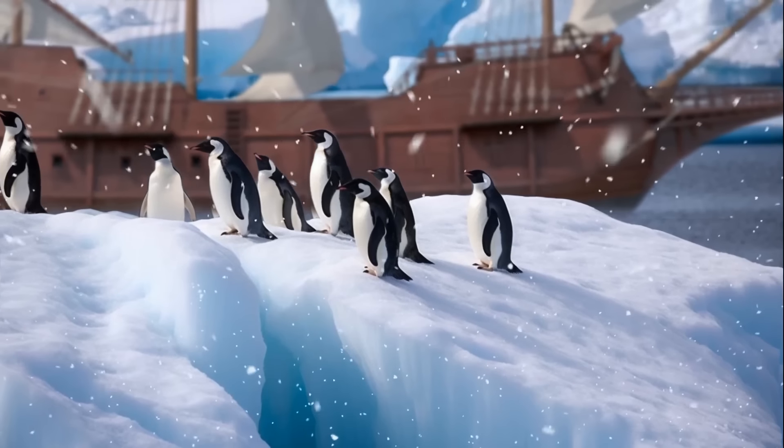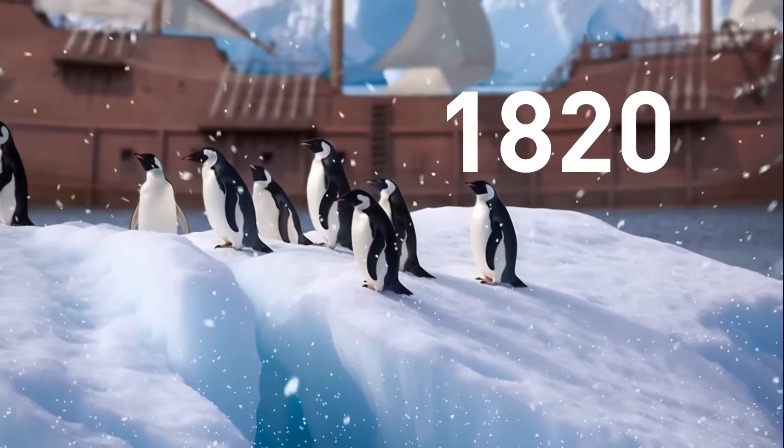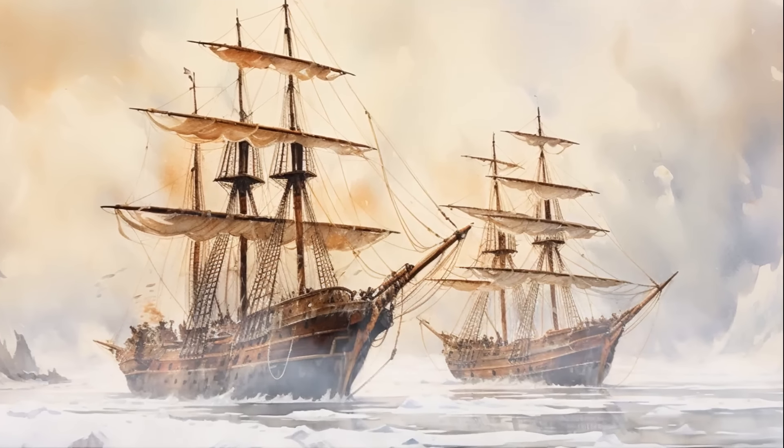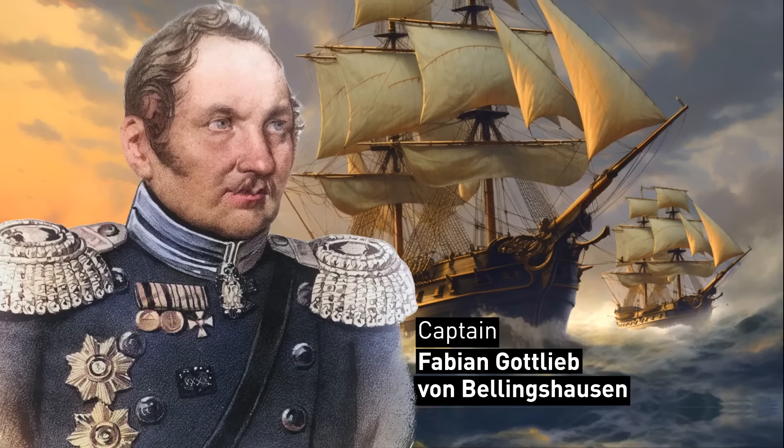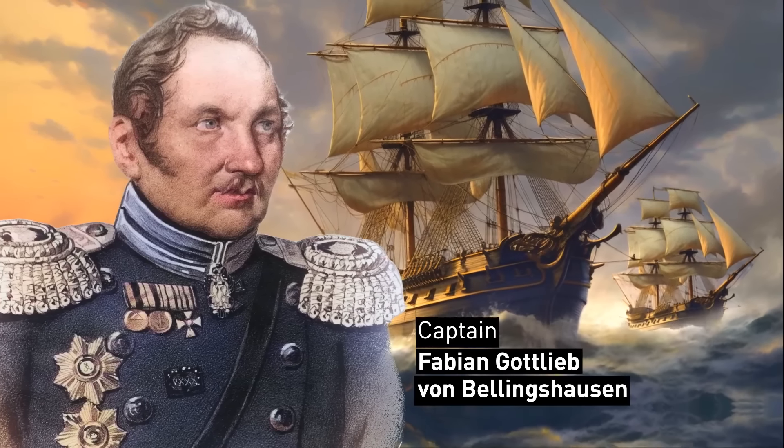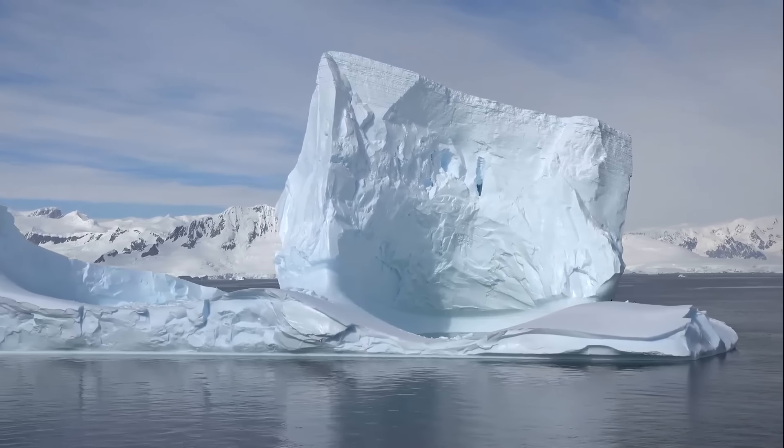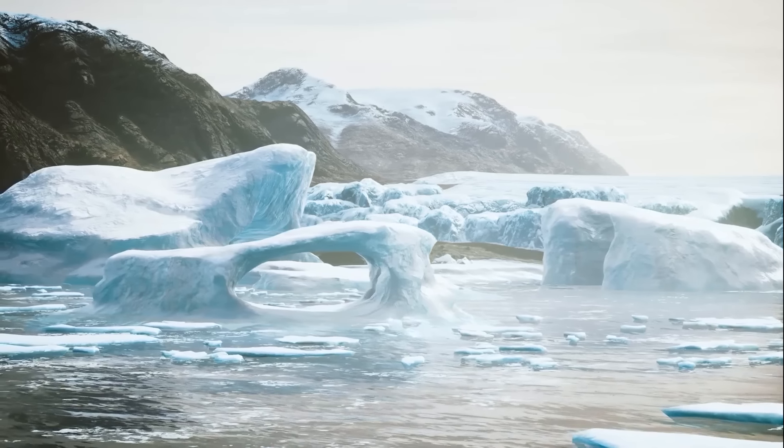The first sighting of Antarctica is widely acknowledged to have taken place in January of 1820, during the voyage of two ships under the command of Captain Fabian Gottlieb von Bellingshausen as part of a two-year exploratory expedition around the world to discover new lands. The captain's ships were the first to have crossed the Antarctic Circle since Cook.